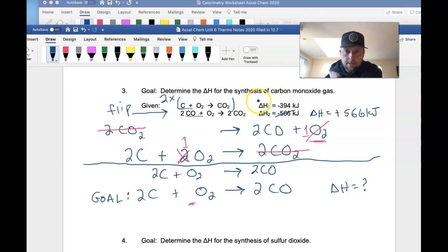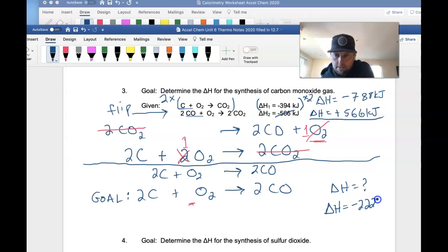But what did I forget? I forgot to mess with this one. So I doubled the coefficients for this one, which means I need to double the value of this. So if I double negative 394, delta H is going to be, I believe, negative 788 kilojoules. And if I add the delta H values together the same way I added the reactions together, negative 788 plus 566 is going to give me, I believe, delta H equals negative 222 kilojoules.